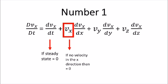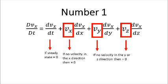Next, we focus on the velocity in the x direction. If there is no velocity in the x direction, vx equals zero. Similarly, this applies for velocity in the y direction and velocity in the z direction.